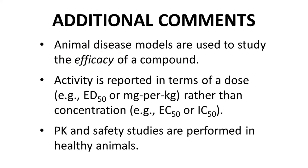Animal disease models are used to study the efficacy of a compound. The activity of the compound is typically reported in some measure of dose, perhaps as an ED50 — the dose required to achieve an effect in 50% of the treated subjects — with the dose being measured as mg per kg (mg of drug per kg of study subject), also sometimes stated as MPK. In vivo studies do not normally report activity as a concentration, such as EC50 or IC50.